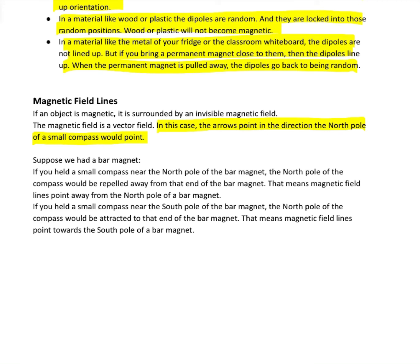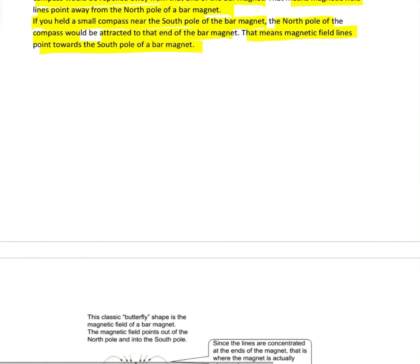Let's say we had just the old school bar magnet. If you held the compass near the north pole of that bar magnet, then the north pole of the compass would be repelled away from that end of the magnet. If you took the same compass and moved it near the south pole of the bar magnet, the north pole of your compass would be attracted to that end of the bar magnet. What this means is that since your compass pointed away from the north pole, that means magnetic field lines always point away from the north pole of the bar magnet. And since that attracted to the south pole, that means magnetic field lines always point towards the south pole of a bar magnet.